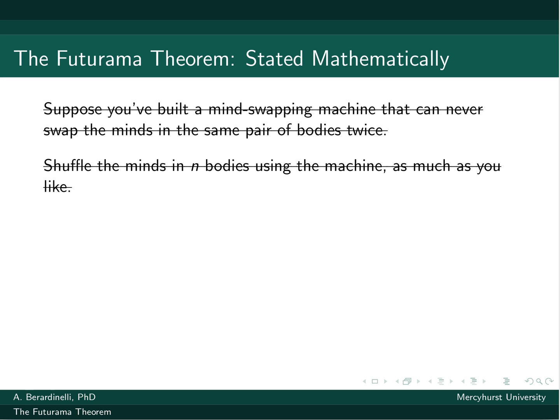So let's rephrase this mathematically. This idea of a mind-swapping machine that can never swap the same pair of bodies twice looks like this mathematically. Sn is the set of all permutations of n things, and so we take some ordering of these minds, some permutation of these n minds. And the product of distinct transpositions is the part about never swapping the same pair of bodies twice. You can never do the same swap twice, so they're distinct transpositions.